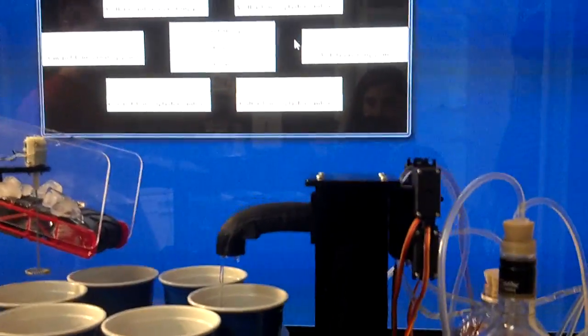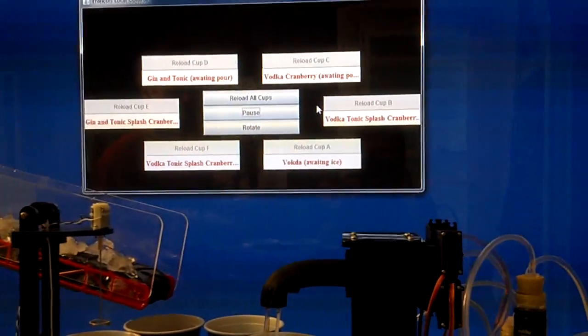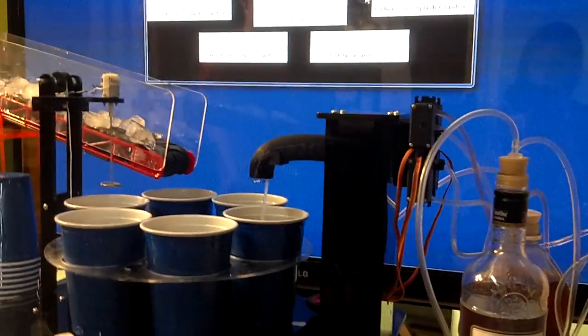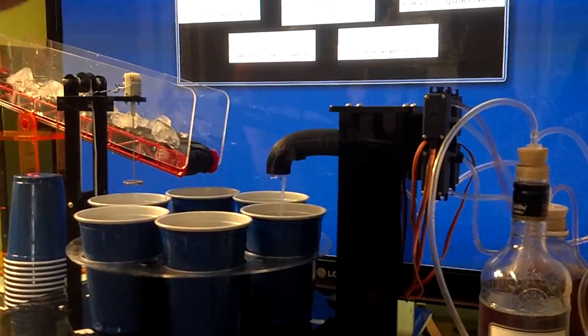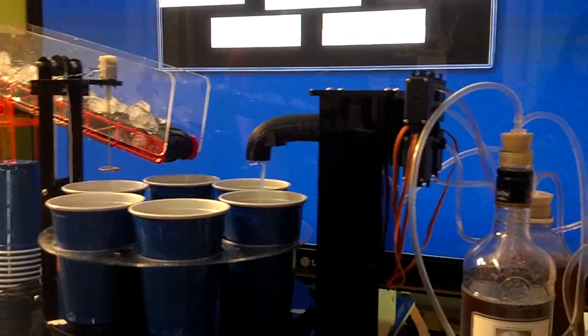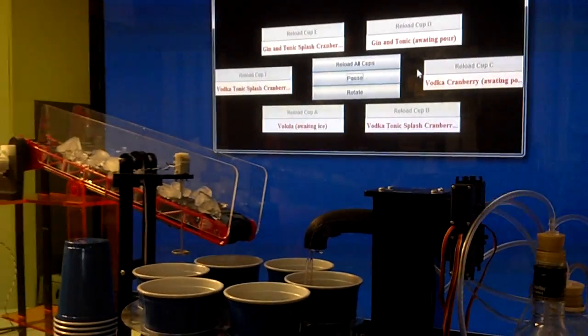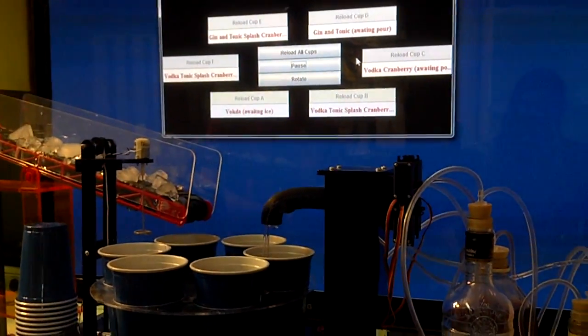So here we can see that Francois Barbeau is making our drinks. It just finished a straight vodka, and is currently working on pouring a vodka tonic splash cranberry. As you can see behind it, we have a graphical representation of the current status. So that if you come to the system and are looking for your drink, you can find it on here.